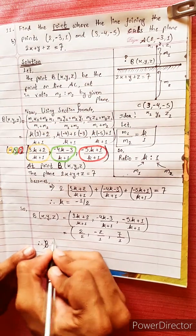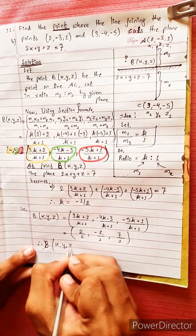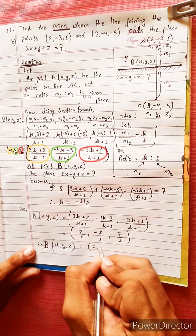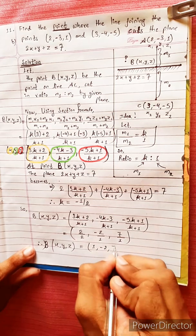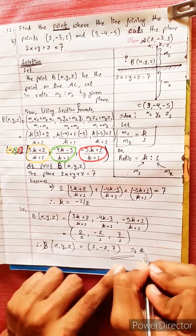Therefore point B has coordinates (x, y, z) equals (1, minus 2, 7). Thank you.